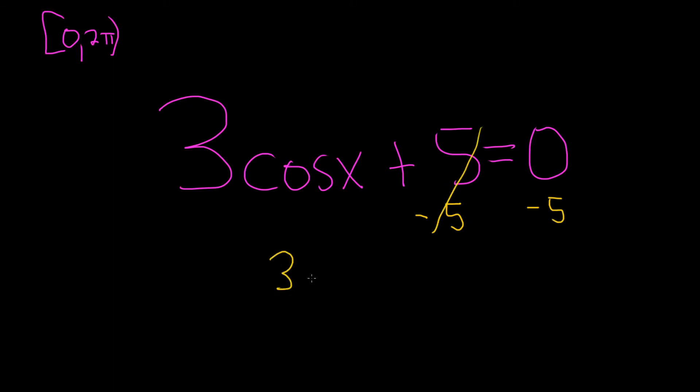So we have 3 cosine x equals minus 5. And now because it's being multiplied by 3, we'll divide by 3. So divide by 3, divide by 3. That gives us cosine of x equals negative 5 over 3.